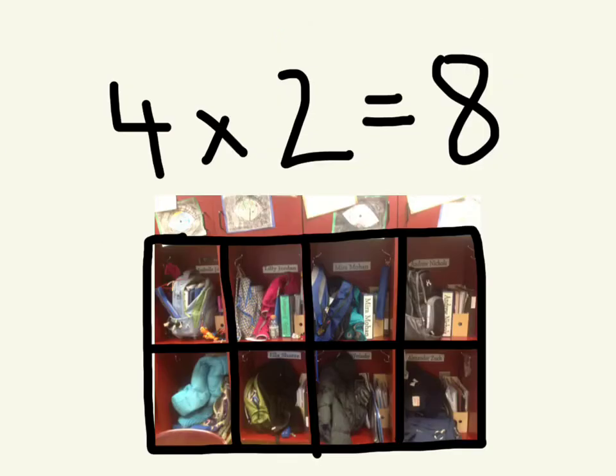Cubbies represent 8. 4 times 2 equals 8.